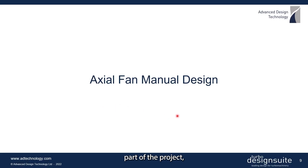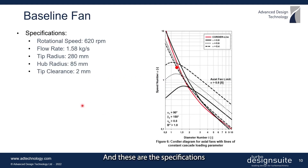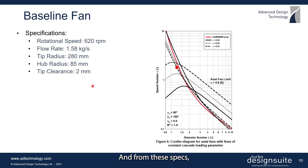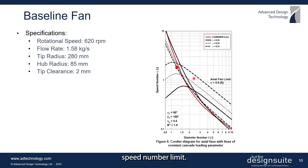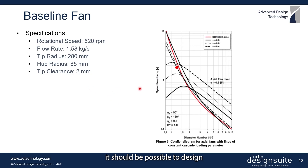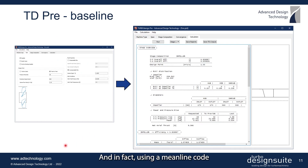Let's start with the first part of the project: the manual redesign of an axial fan baseline impeller. These are the specifications for this baseline impeller, which is basically a propeller-type axial fan. From these specs we can see that the fan sits very close to the cordial line and well within the axial fan speed number limit, meaning it should be possible to design an axial fan with a high efficiency level.